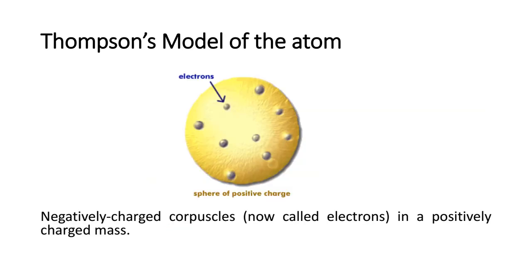Thompson's model of the atom - he thought that the negatively charged corpuscles, now called electrons, were kind of just stuck in a positively charged mass. We know that obviously this is not what an atom looked like, but back then that's all the evidence they had, so they based their model on what evidence they had.